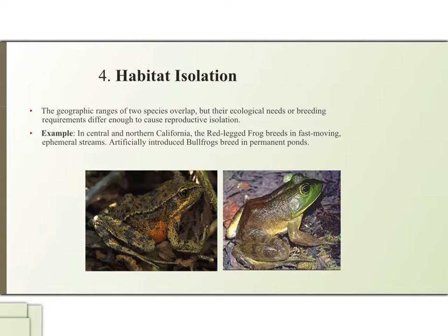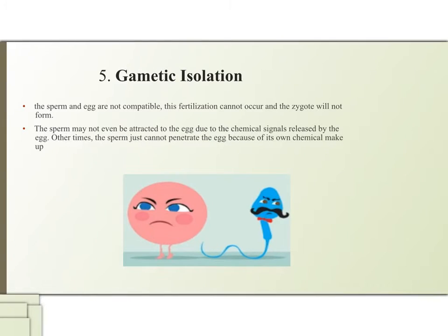The fourth type is habitat isolation. The geographic ranges of two species overlap, but their ecological needs or breeding requirements differ enough to cause reproductive isolation. As an example, in central and northern California the red-legged frog breeds in fast-moving streams, while artificially introduced bullfrogs breed in permanent ponds.